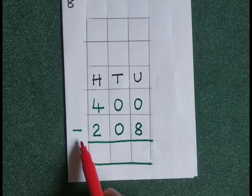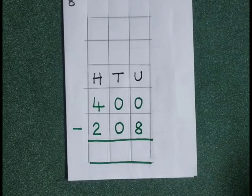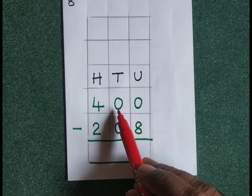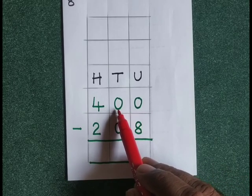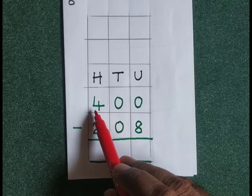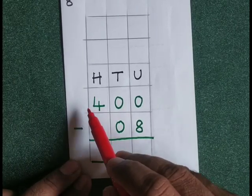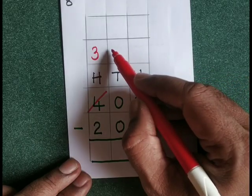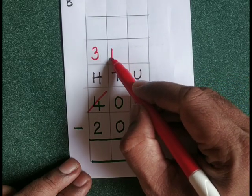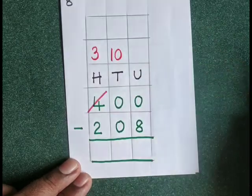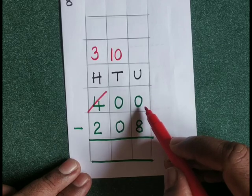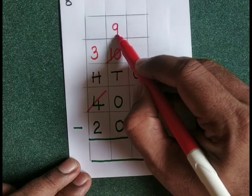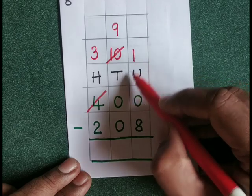400 minus 208. 0 minus 8 — we can't do that. We can't borrow from the tens place because 0 is there, so we have to borrow from the hundreds place. There are 400; take 100 from 400 — 300 will be left. That 100 means 10 tens. From those 10 tens, borrow 1 ten — 9 tens will be left. That 1 ten means 10 units plus 0 units equals 10 units.